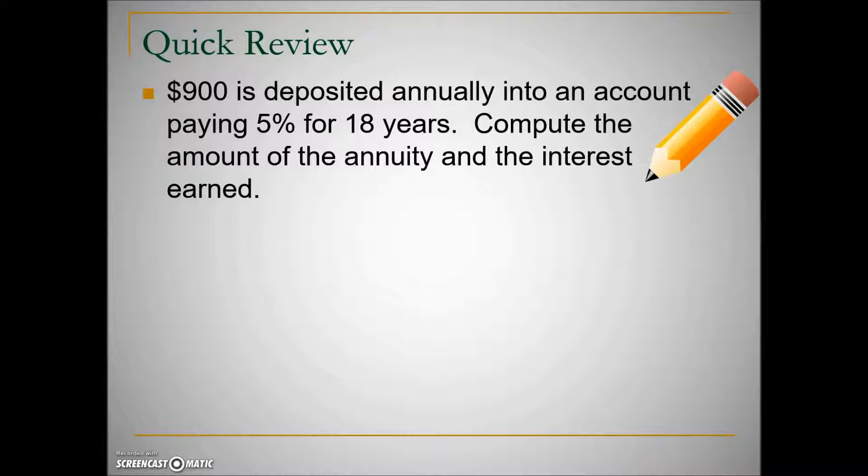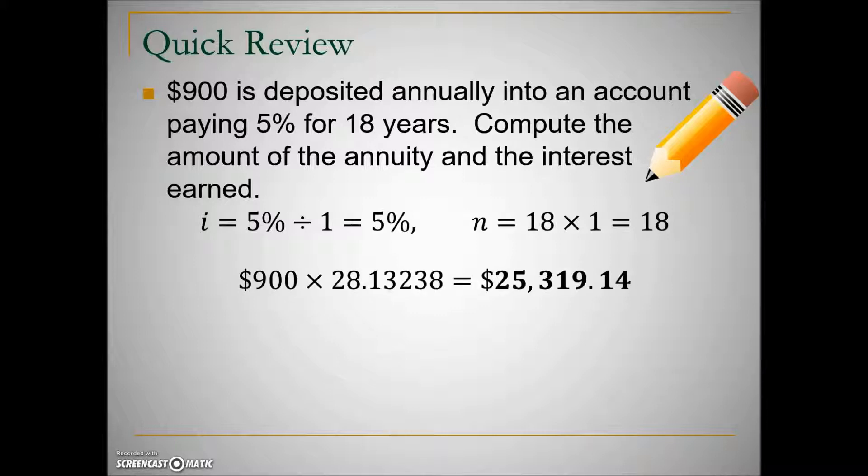Just like the last two problems, we need to calculate the interest per compounding period and the number of compounding periods. 5% compounded annually means we divide by 1, which isn't going to change that. Annually, once per year for 18 years, means there will be 18 deposits. When we look that value up on our annuity table, you should find this value 28.13238.